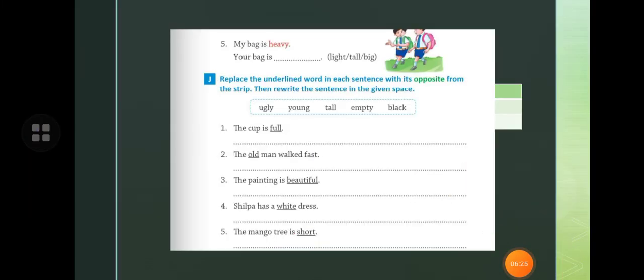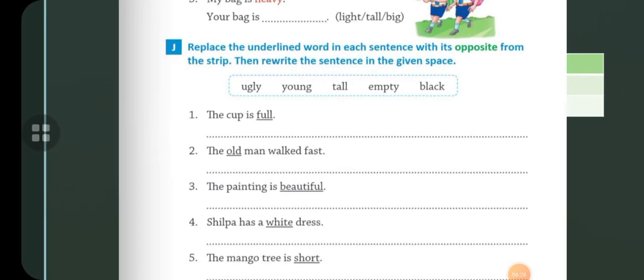Now next exercise is replace the underlined word in each sentence with its opposite from the strip. Then rewrite the sentence in the given space. What you have to do? Here, the cup is full. You will write the cup is empty. Opposite of full is empty. The old man walked fast. Opposite of old is young.